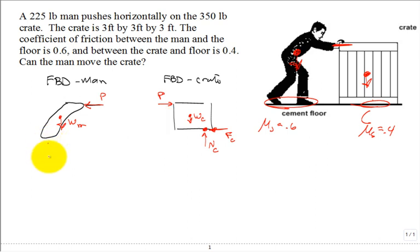Then we have the normal underneath the man, just like we had the normal underneath the crate. And then do we have friction in this direction or the opposite direction? You have to think about that for a minute. This is the frictional force under the man. Did I do the free body diagrams correctly? If we mess them up we got problems. Okay, look good.